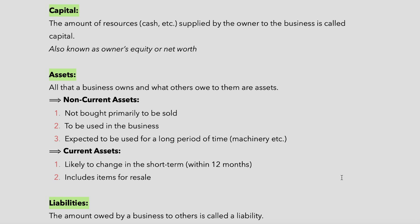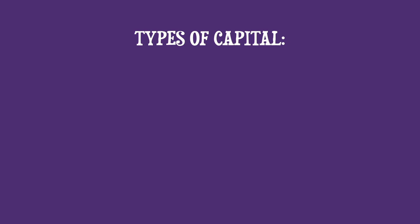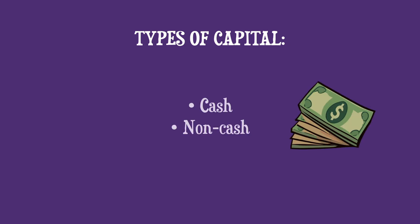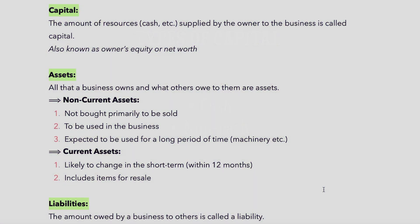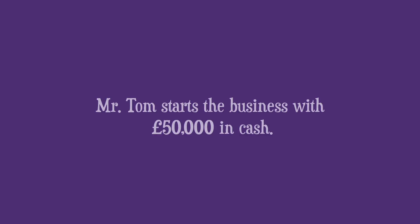Firstly, let's look at capital. What is capital? Capital is the amount of resources supplied by the owner to the business. There are many types of capital which can be put into the business by the owner, such as cash and even non-cash items such as cars. Capital can take many forms, but usually in your Edexcel IGCSE accounting papers it takes the form of cash.